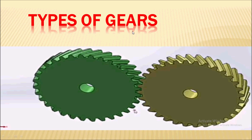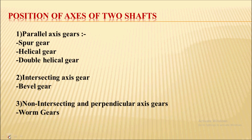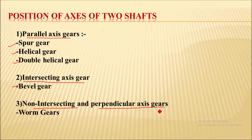Now let's move on to the types of gear. Gears are classified based on the position of the axis of two shafts. They are classified as parallel axis gears — under that we have spur gear, helical gear, and double helical gear — intersecting axis gears — under that we have bevel gear — and non-intersecting and perpendicular axis gears, under that we have worm gears. We will see all these gear types in detail in the upcoming slides.